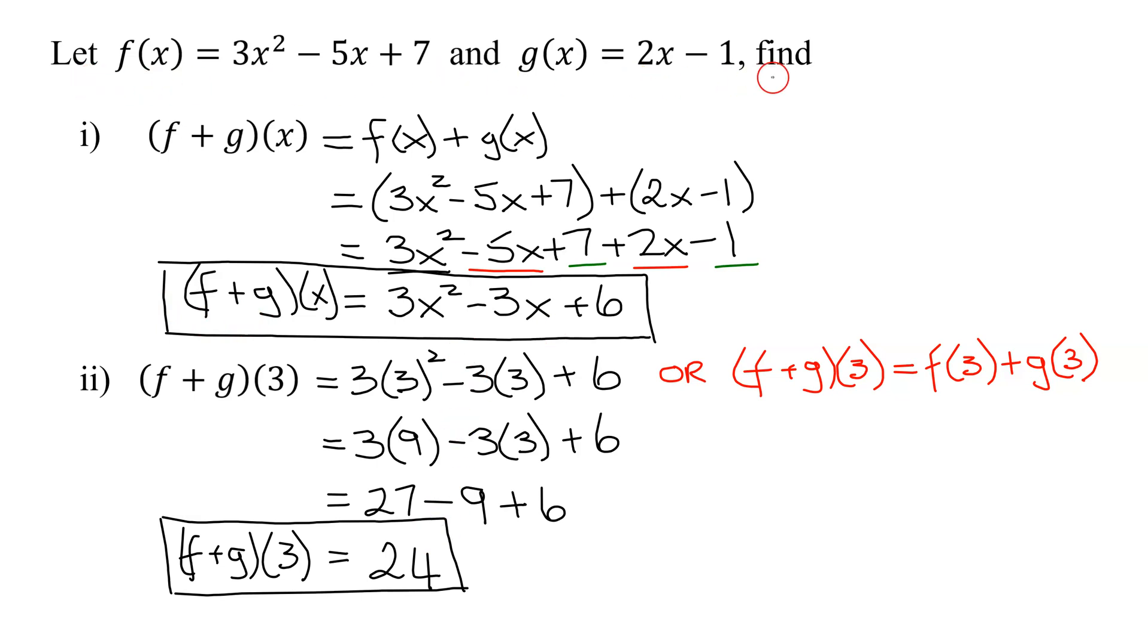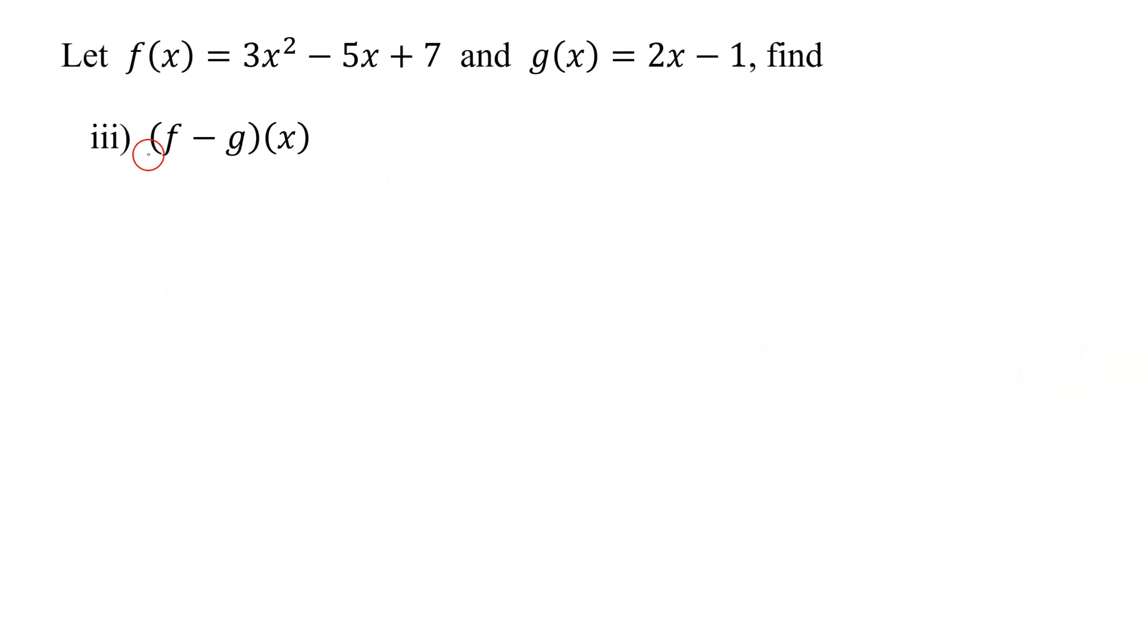And now for these same two functions, I need to work out the difference function. Notice the definitions of f and g are the same as they were on the last slide. So the difference function (f - g)(x) by definition is just f(x) - g(x). So what was f(x)? f(x) was 3x² - 5x + 7. And then I'm going to subtract g(x), which is 2x - 1.